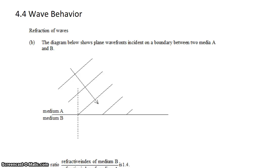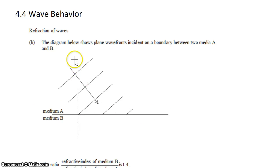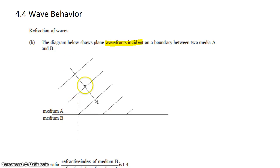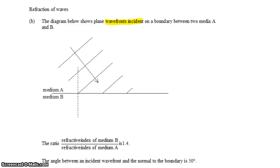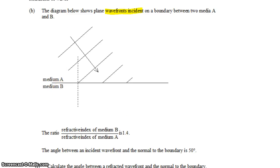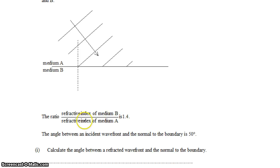David Kahn here with another IB question from Topic 4.4. We're looking at refraction of a wave as it travels from one medium into another. In the diagram, a wave approaches the boundary between two mediums, shown by wavefronts — these lines — with the wave traveling in the direction shown by the ray arrow. The first medium is medium A, the second is medium B, and the ratio of their refractive indices is 1.4.